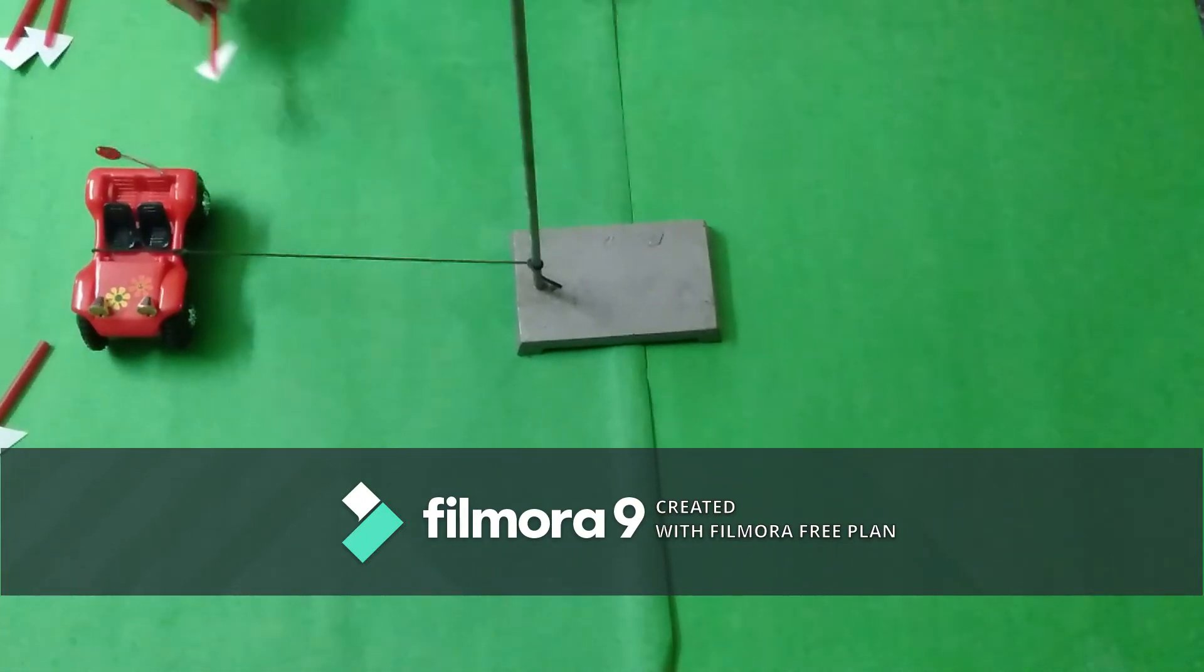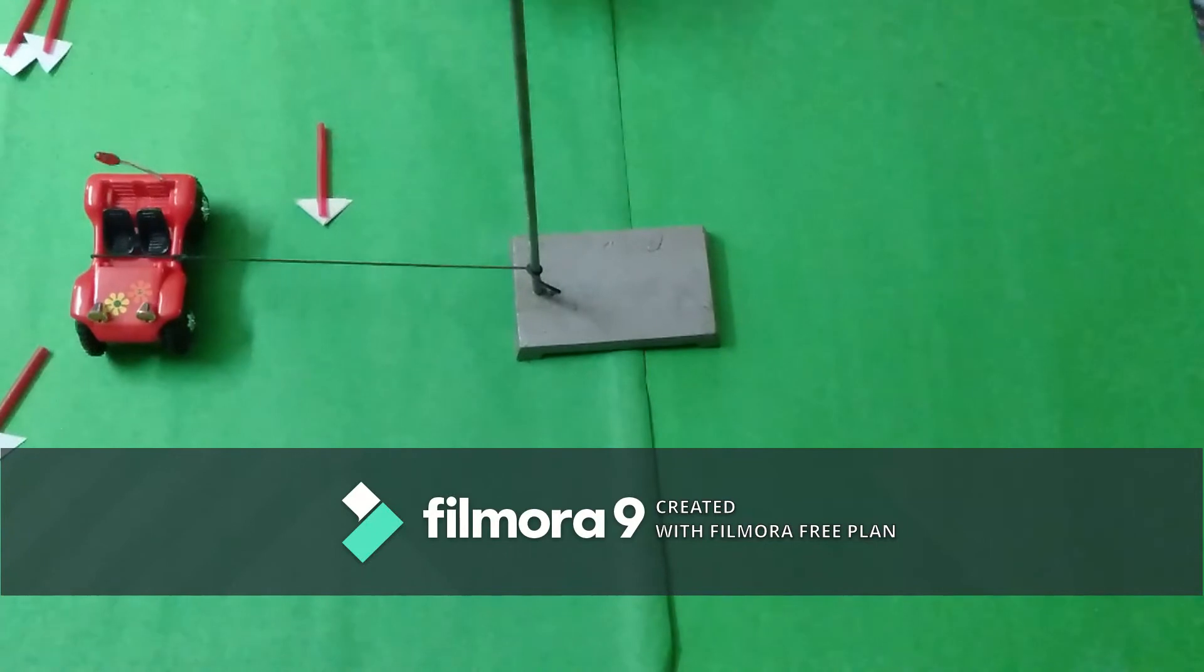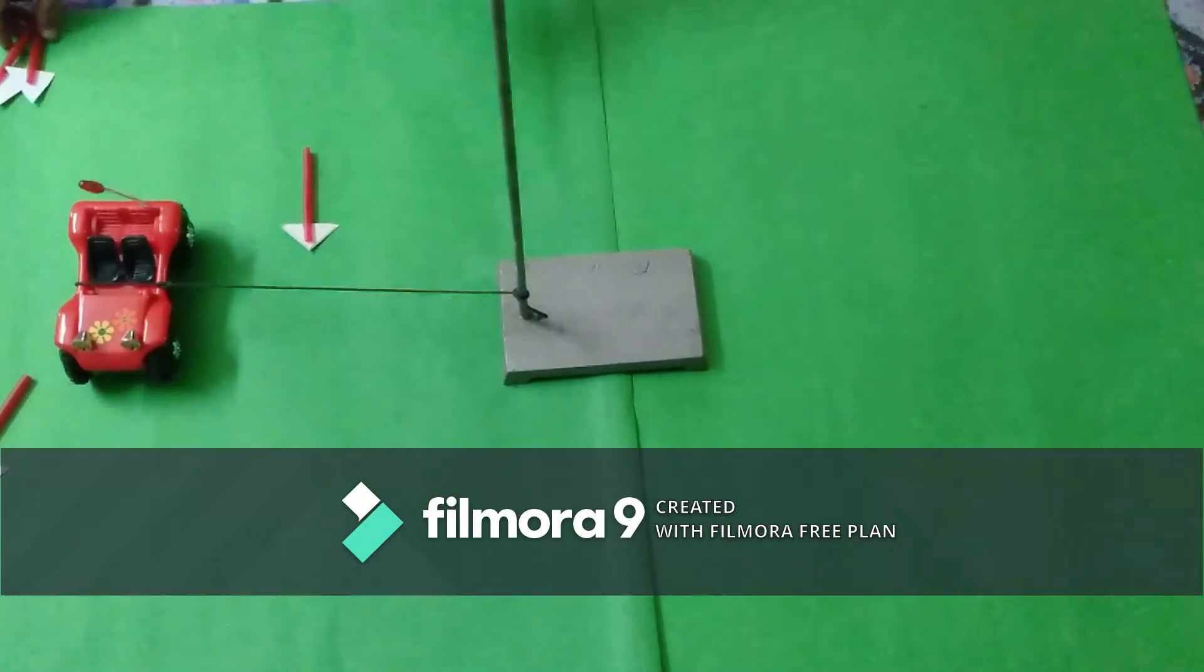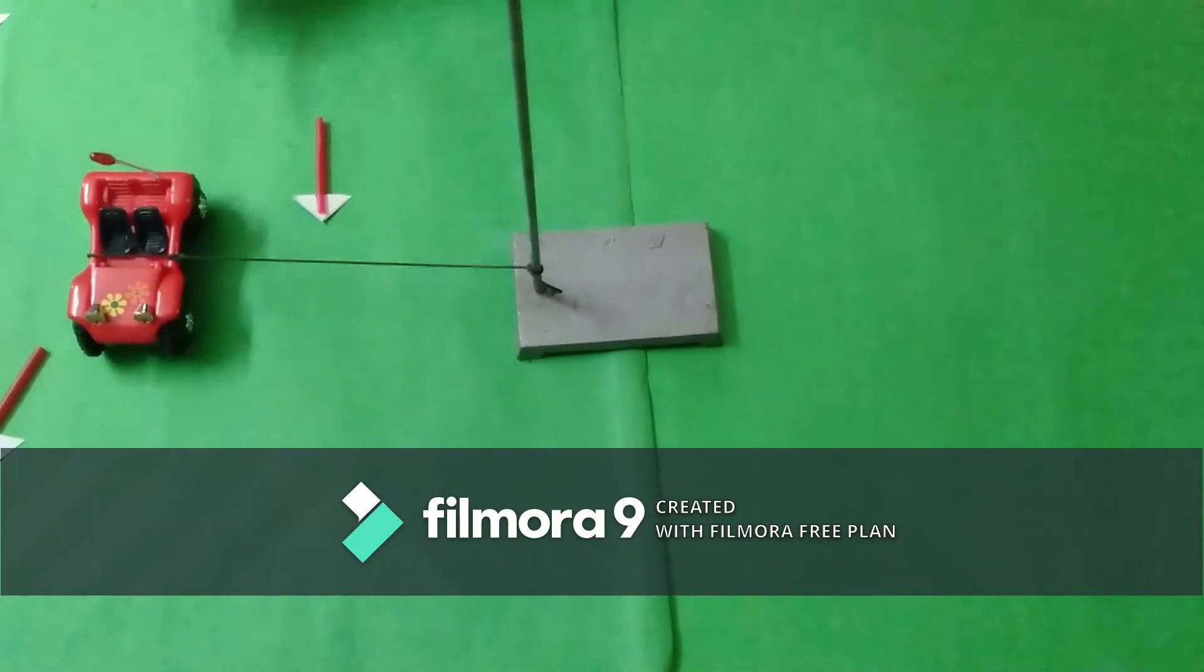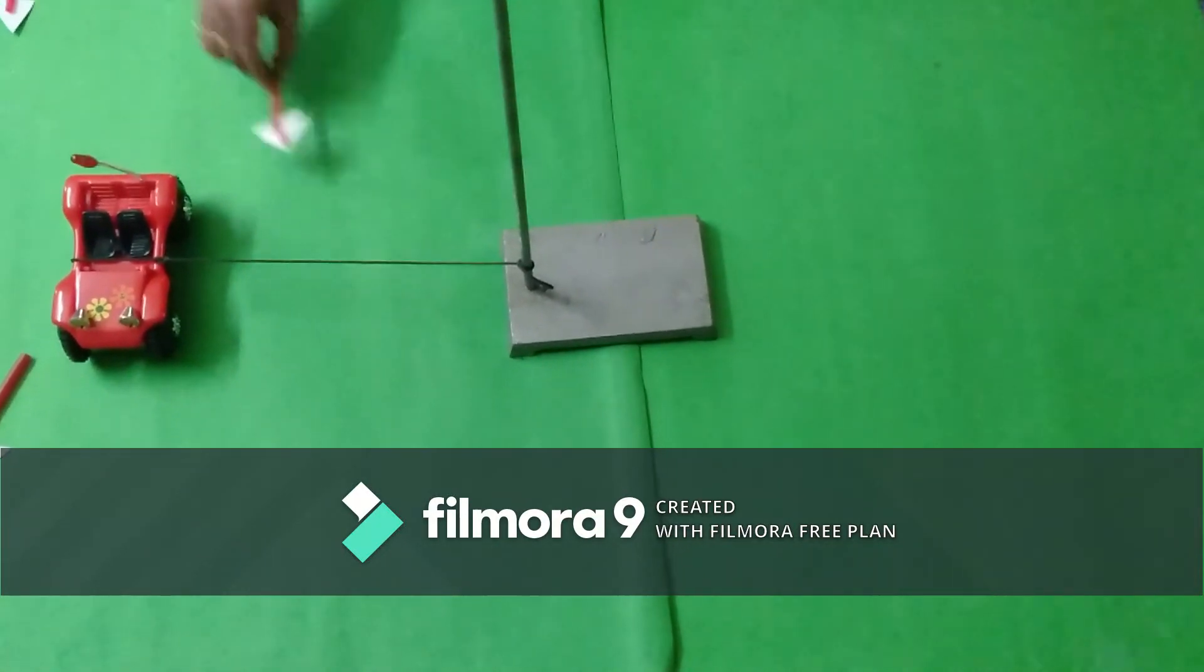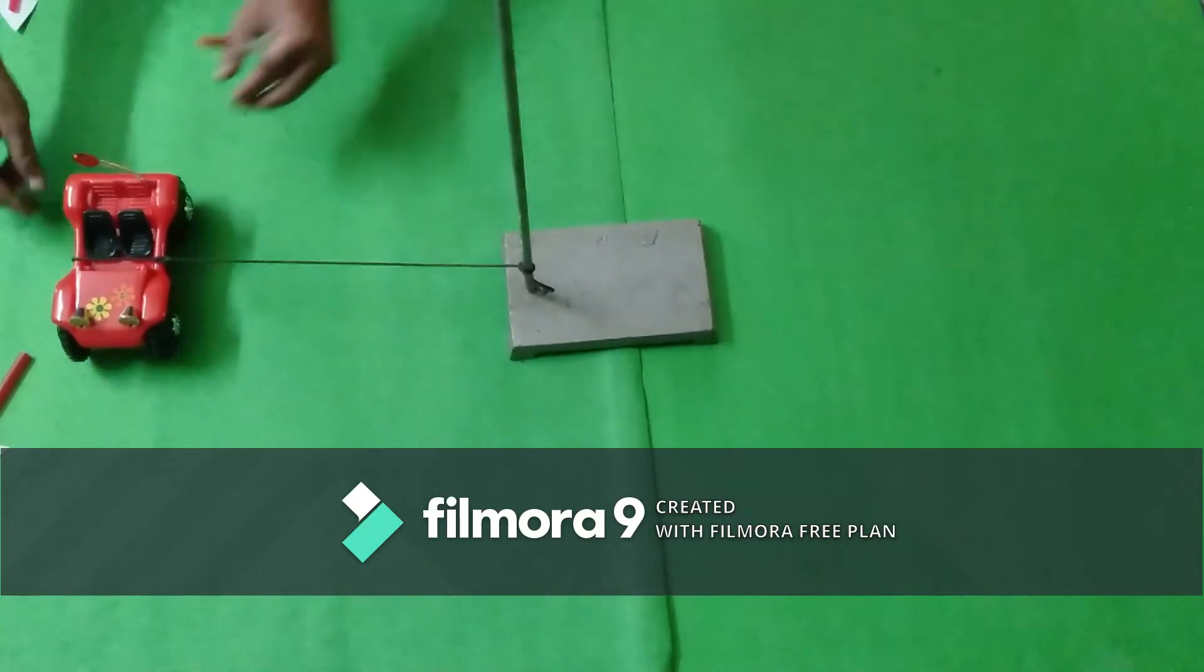And I would like to show you the direction of instantaneous velocity at that particular point by using these arrows. Now let me demonstrate it and later on we will analyze the circular motion.